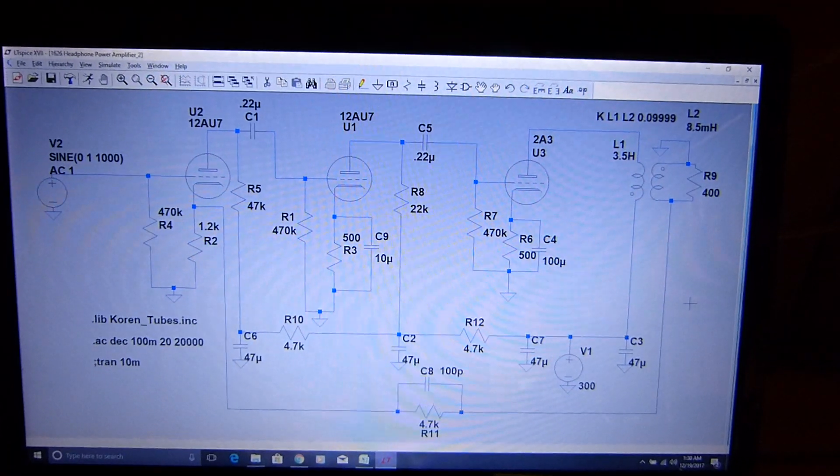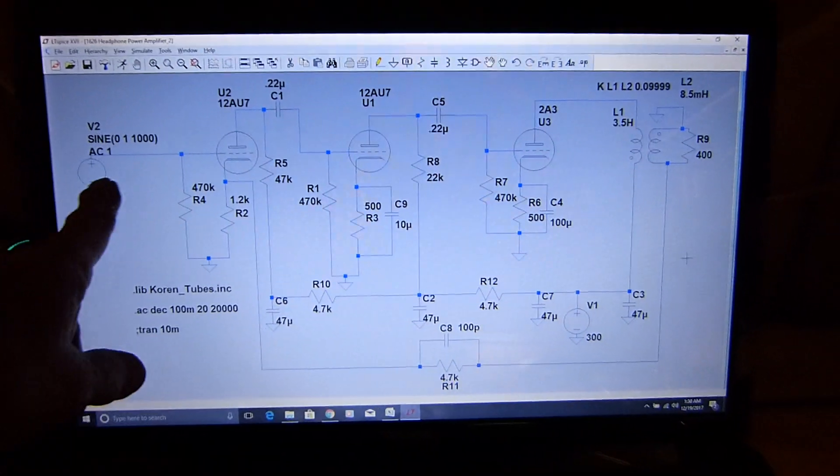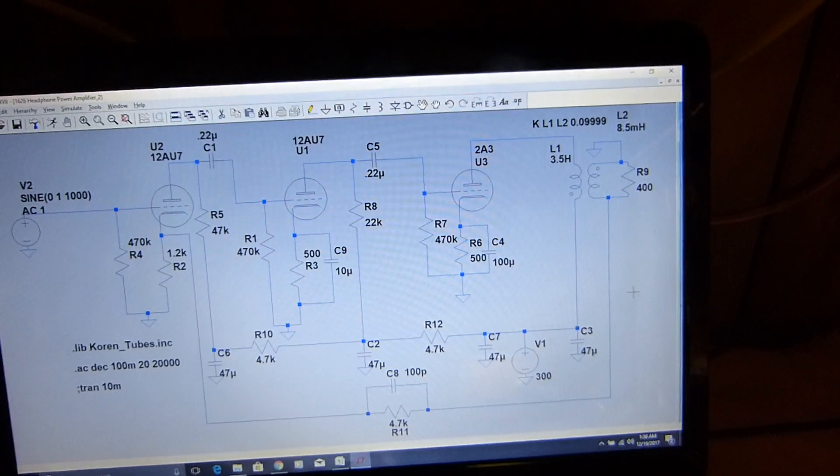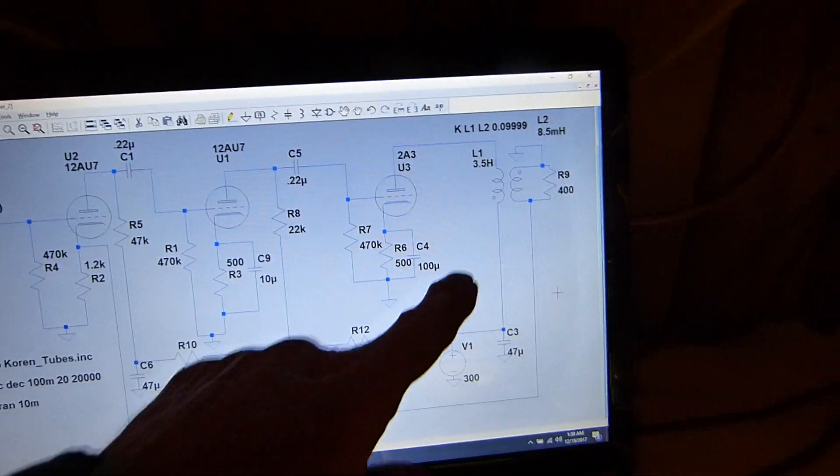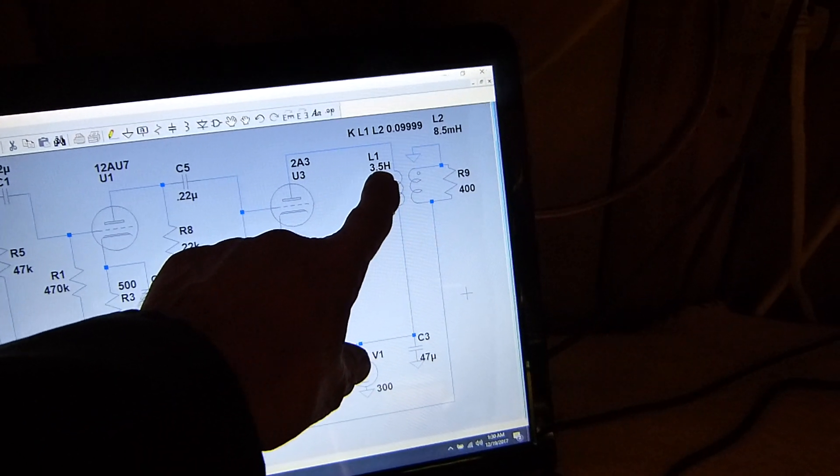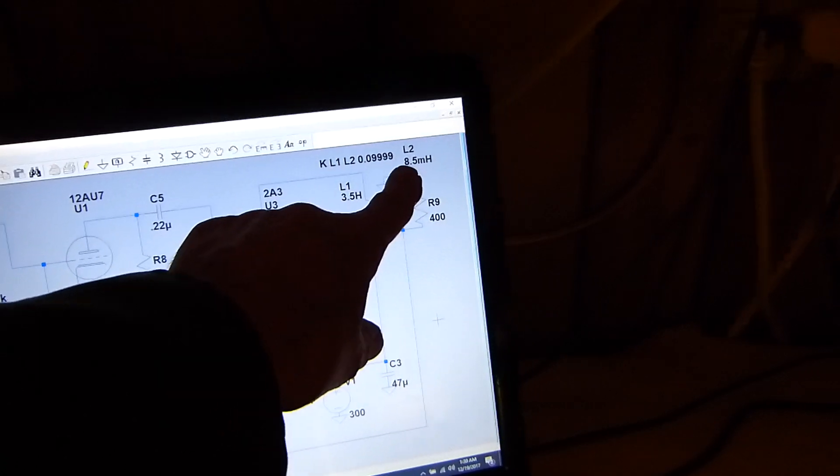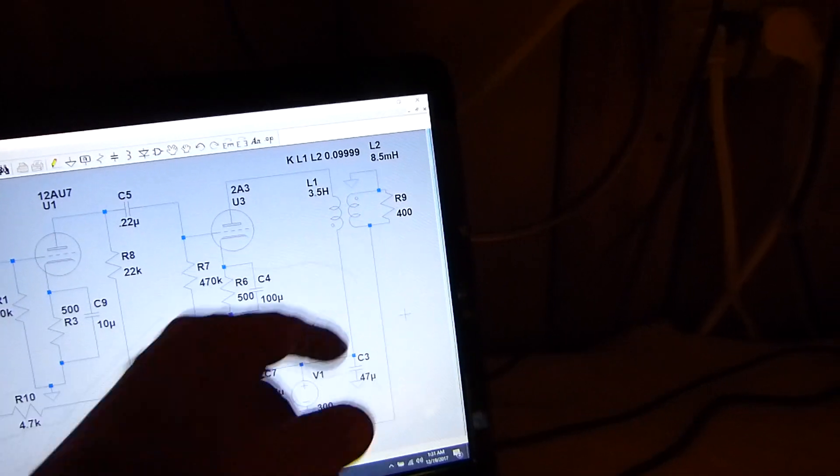But there's really nothing unusual about this. This is just two stages driving a power amplifier into a transformer. 3.5 Henrys is the primary inductance. This 8.5 millihenrys is the secondary inductance.